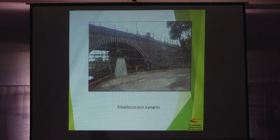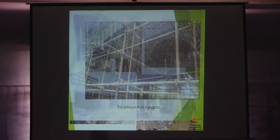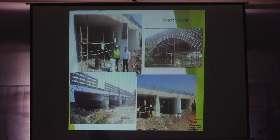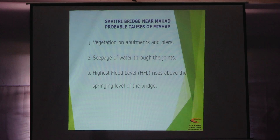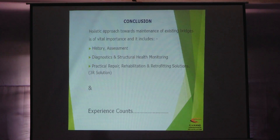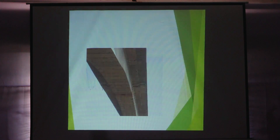These are the joints. This is a bridge near Nashik. This was the Savitri bridge. These are some photographs of the distresses.